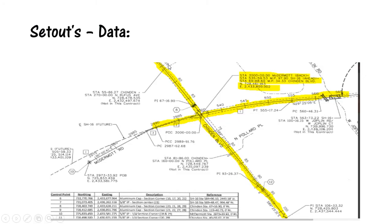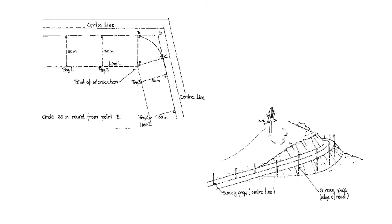The setup data includes control points with northing, easting, and description. The alignment data has all points along the alignment with northing, easting, elevation, and description at every 5-meter interval. Once we have this data, we can set out for construction.